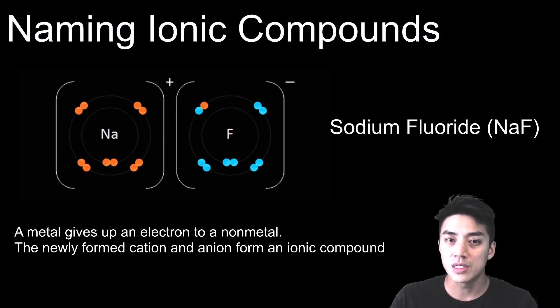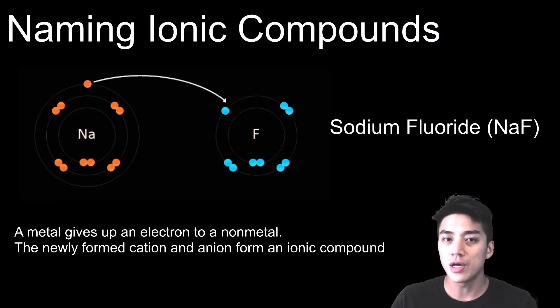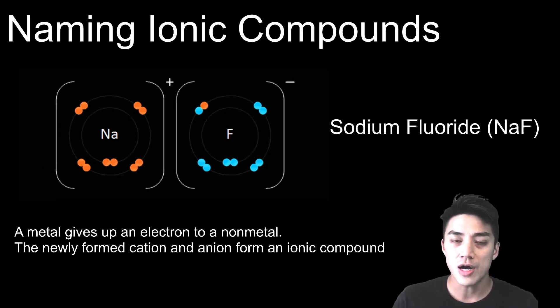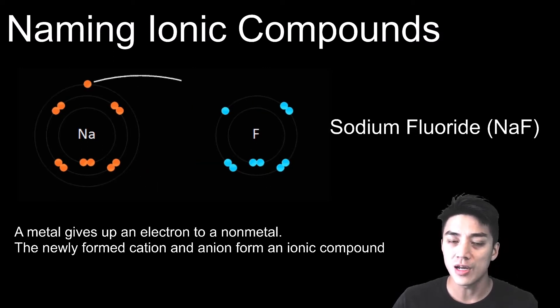Typically metals give away electrons and the non-metals take them on, and the newly formed cation and anion are attracted to each other and they form an ionic compound.